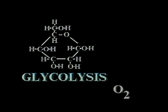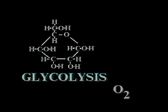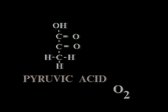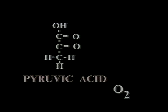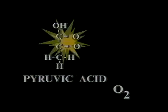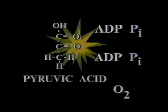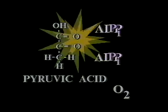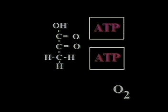Glycolysis begins as glucose is broken down into molecules of a simpler compound called pyruvic acid. This releases free energy. The free energy is used to bond two ADP molecules to two molecules of inorganic phosphate, yielding two molecules of ATP.